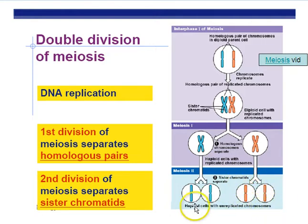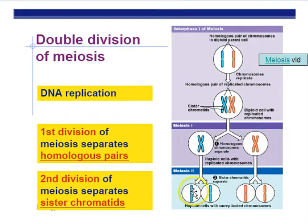Notice the end results in meiosis compared to mitosis. In meiosis, we produce four cells, not just two. Also, the cells produced during meiosis are not genetically identical to the starting cell — that's another difference between meiosis and mitosis. During mitosis, the ending cells were the same as the starting cell.